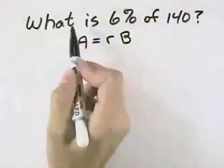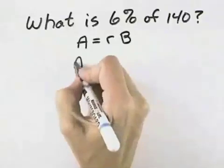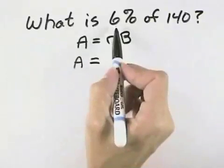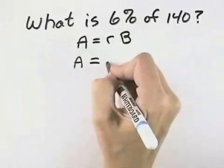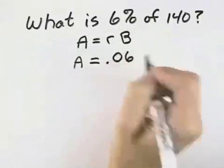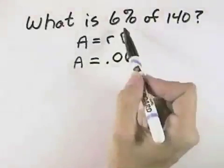So A is what we're looking for. Is is your equal. 6%, remember that must be written in decimal form, so it would be .06 when we move the decimal two places to the left.